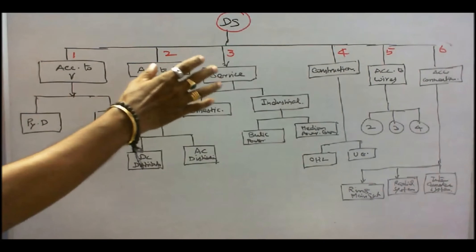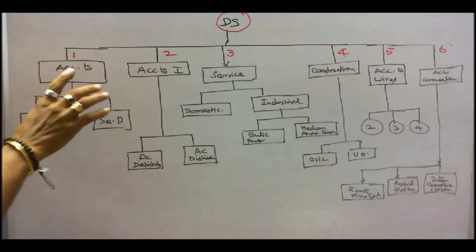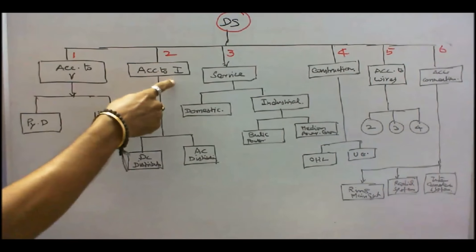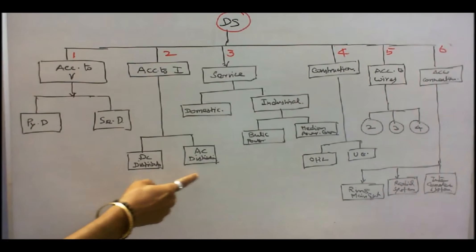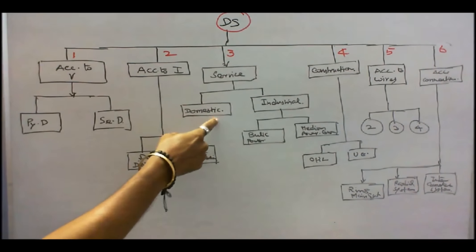The distribution system is classified in six ways. Number one, according to the voltage, whether it's a primary distribution or secondary distribution. Number two, according to current, DC current or AC current. Number three, according to the service, domestic or industrial.